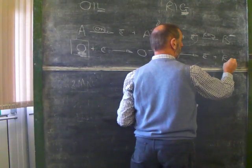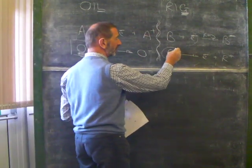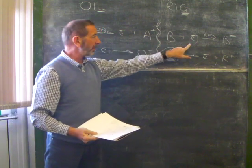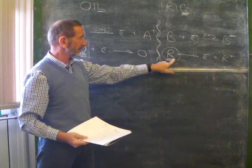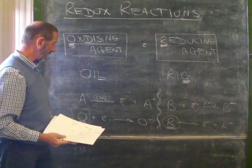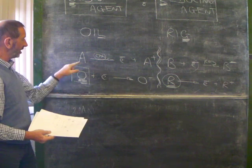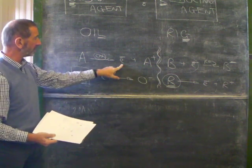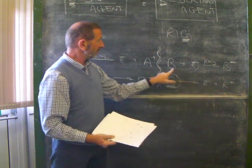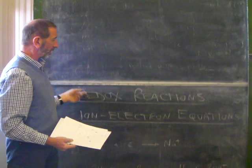R probably becomes R plus. But that's not the point. The point is, R is a reducing agent. It's not being reduced. It's causing something else to be reduced because it supplies the electrons. So there I have it. Oxidising agent, reducing agent. An oxidising agent grabs electrons for itself, causing something else to lose electrons. A reducing agent supplies electrons that makes reduction possible.